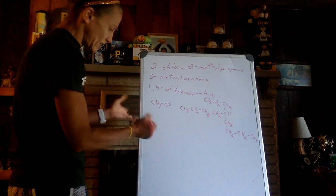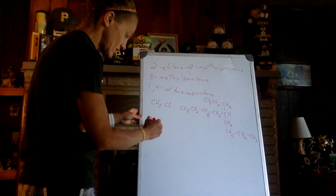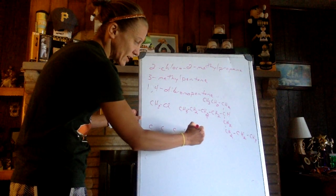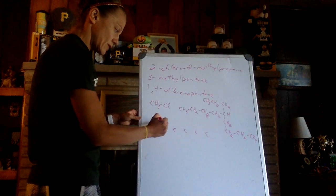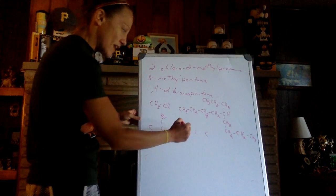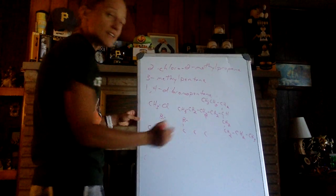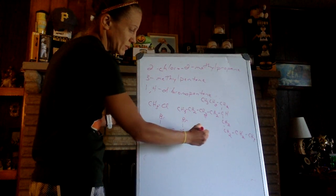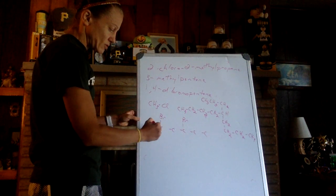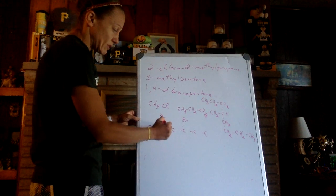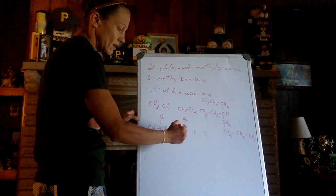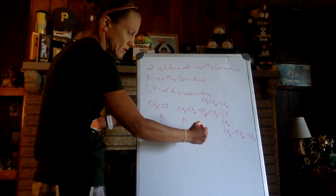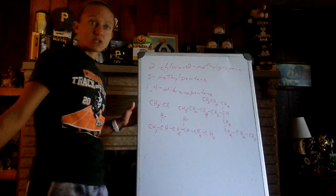2,4-dibromohexane. Hexane is six. I've also seen people draw these this way. Hexane is six. Sketch out six carbons. There's a bromine on two and a bromine on four. Now, how many hydrogens do I need on each? Because each carbon will bond to the next. So my end carbons are CH3. A middle carbon with something on it is always CH. A middle carbon without something on it is always CH2. CH, CH2, CH3.